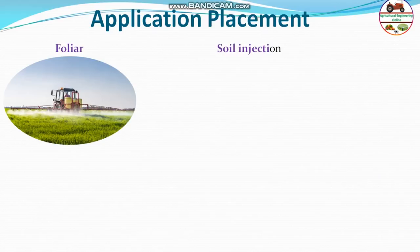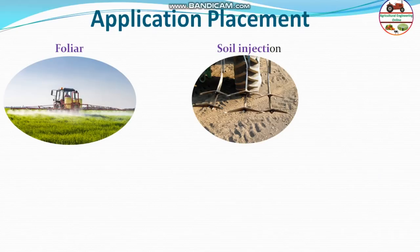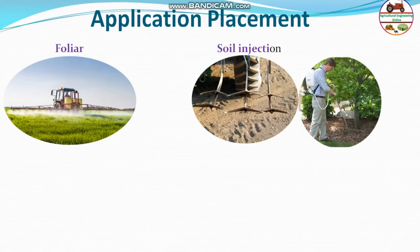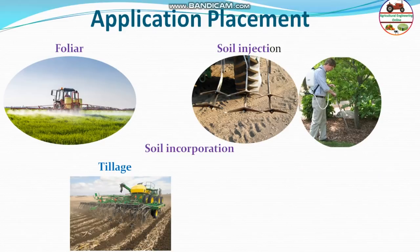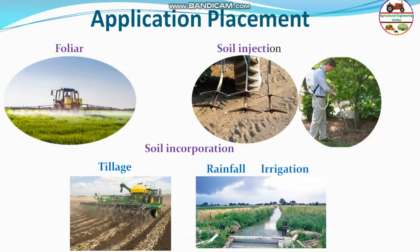Soil injection involves injecting liquid or depositing granular chemicals into the soil, often at the base of the tree to control root diseases or pests. Soil incorporation is done during tillage, mixing pesticides or fertilizers into the soil. The rainfall or irrigation method mixes fertilizers or chemicals with irrigation water so they are applied across the field without a separate sprayer.